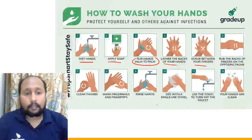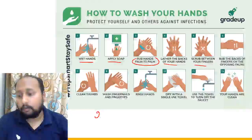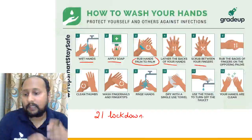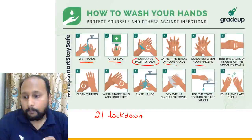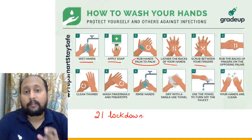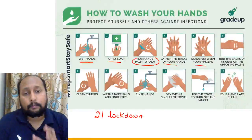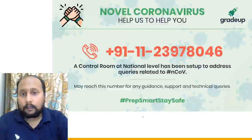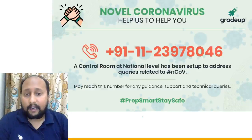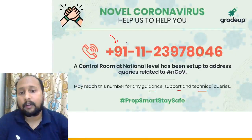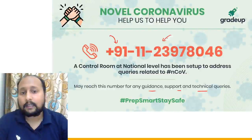There is a 21-day lockdown going on, so you need to stay at your home. The only option to fight COVID-19 is to stay at home and be hygienic. If you need any guidance, support, or have technical queries, the Government of India has provided a toll-free number: +91-11-23397804-6.